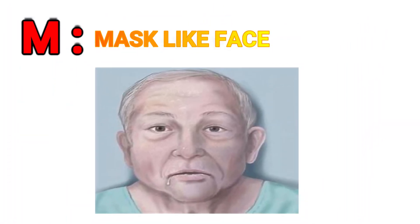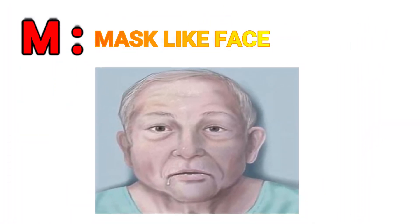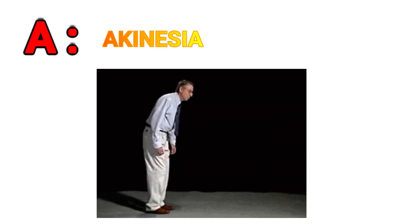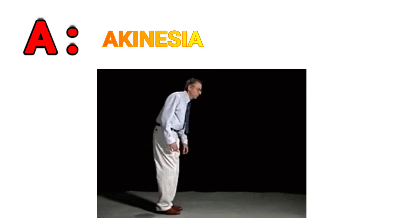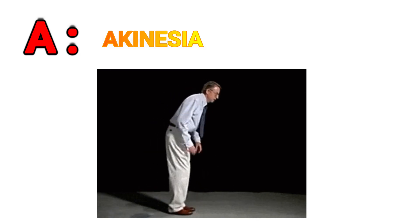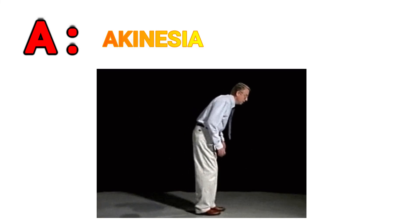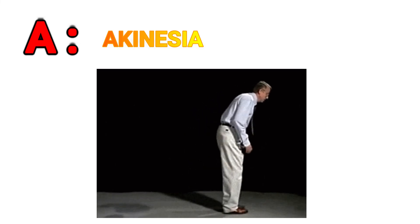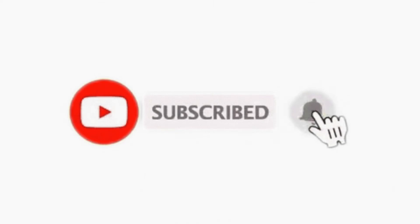M is for mask-like face — mask facies can be seen in Parkinsonism, described as an expressionless or complete lack of facial affect. A is for akinesia — loss or impairment of the power of voluntary movement. Akinesia is one of the main symptoms doctors look for when diagnosing Parkinson's disease.